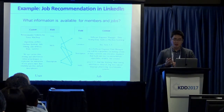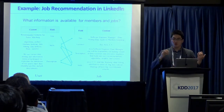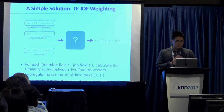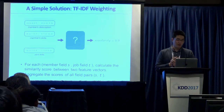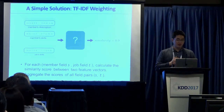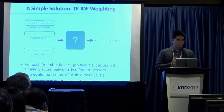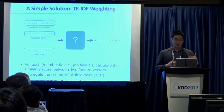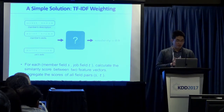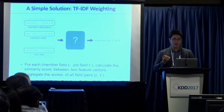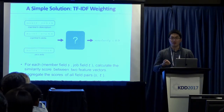In the LinkedIn job recommendation setting, we are given LinkedIn members, their expertise, user profiles, and job profiles — including required skill sets, job descriptions, location, and titles. We want to align users with jobs that best fit them. A simple solution using TF-IDF weighting breaks everything down to a flat feature vector, computing pairwise similarity scores between member fields and job fields, then fitting a linear regression model.